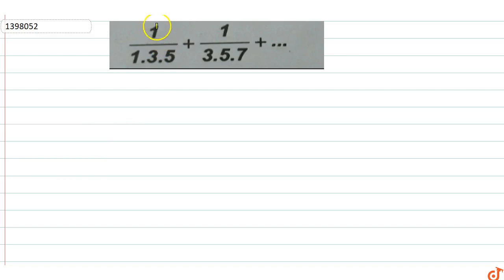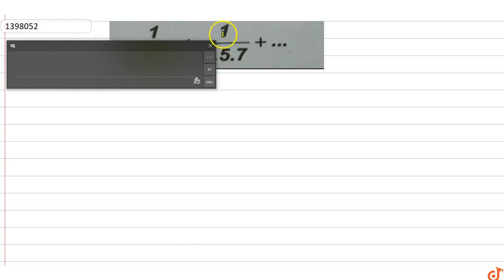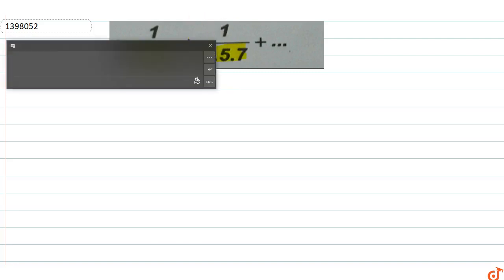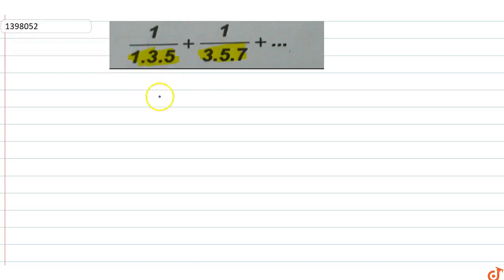In this question you have to find the sum of this series up to n terms: 1 upon 1 into 3 into 5, plus 1 upon 3 into 5 into 7, up to n terms. What will be the sum S of this series?